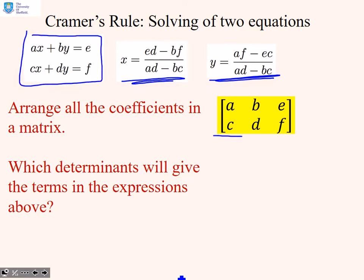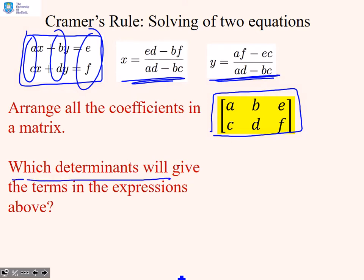Now we're going to take these two simultaneous equations and arrange them in augmented matrix form. You can see the coefficients of x, a and c, are the first column, the coefficients of y, b and d, are the second column, and the constants are the third column. Now we want to ask which determinants will give the terms we need to solve for x and y.